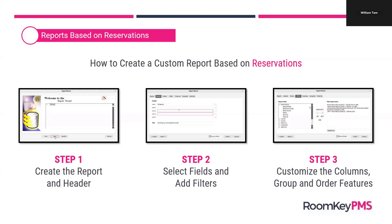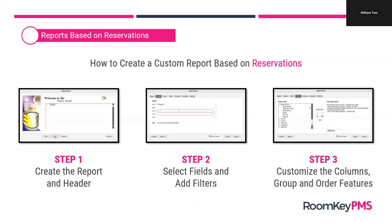We're also going to select the arrival date field, and that allows us to create a filter based off of the arrival date. The result is that we want to see future reservations by arrival date that have the Booking.com or Expedia.com rate plan associated, so we can see those arrivals coming up for future dates or when those reservations arrived in the past.